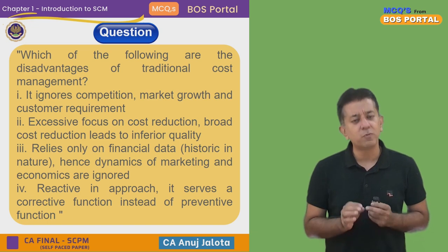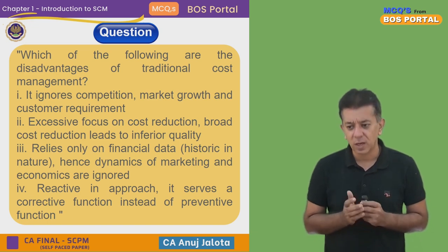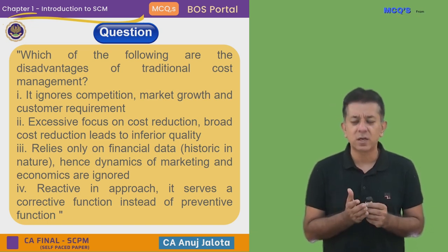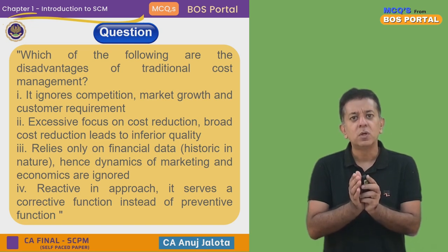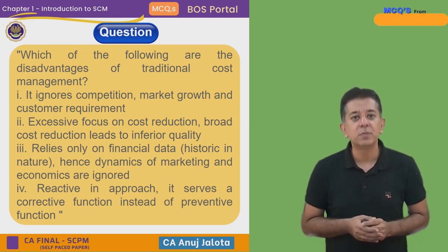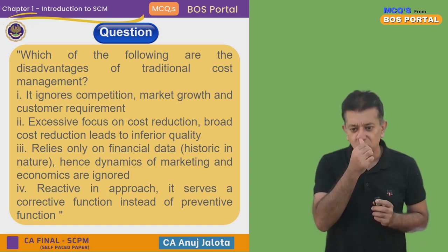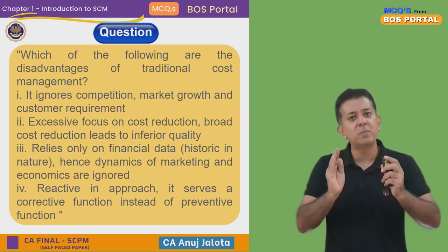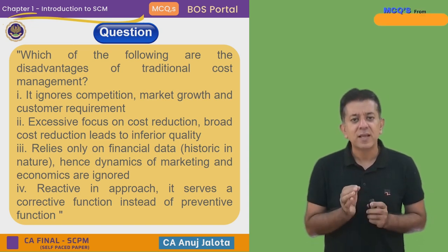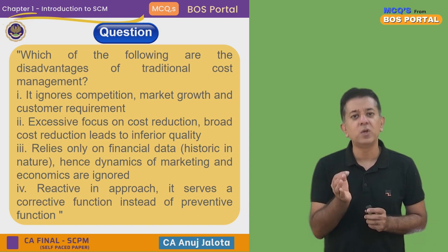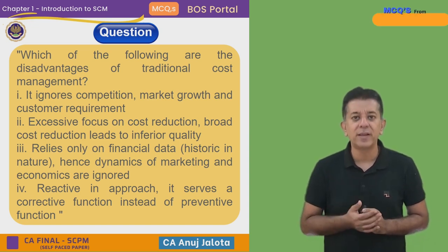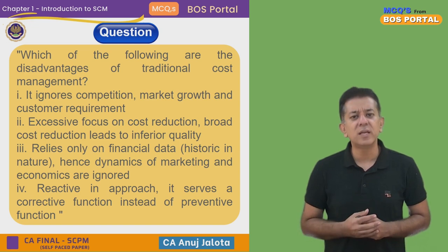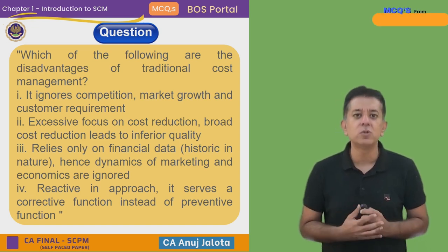The first disadvantage is that it ignores competition, market growth, and consumer requirements. Traditional cost management was developed around the 1960s and 1970s, when there were very few manufacturers in the world and competition was not there. Costing developed around only one thing: let's try to focus on reducing our cost. The moment cost comes down, profit automatically goes up — that is what you all learned in CA Inter.